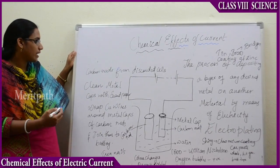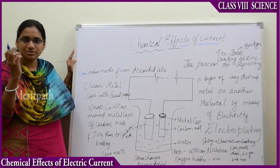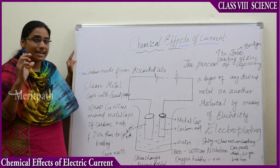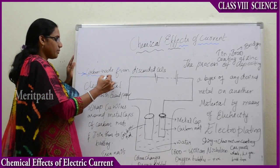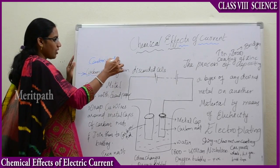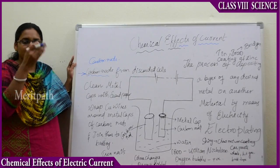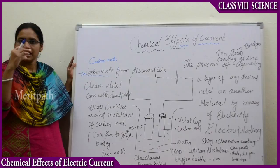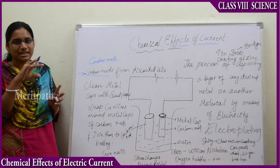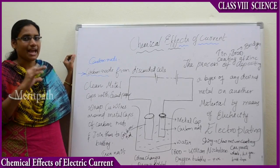I got these carbon rods from discarded cells — the batteries you will see at home. After discarding these carbon rods, I made them clean and wiped them with sandpaper. Therefore, I have removed all dust particles and water from the carbon rods, so these carbon rods are very clean and clear.